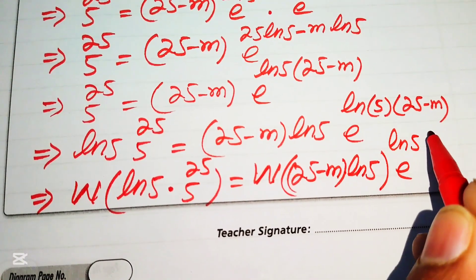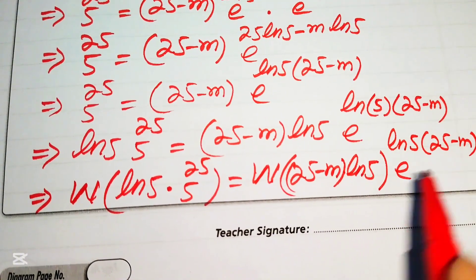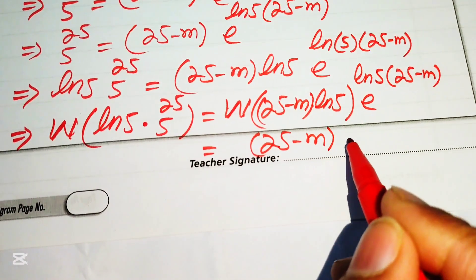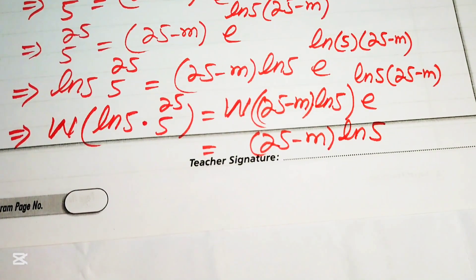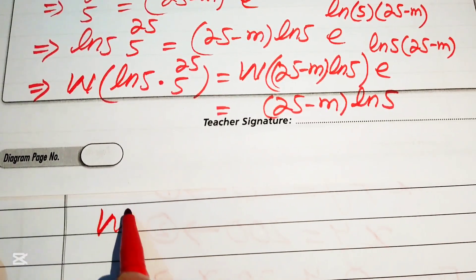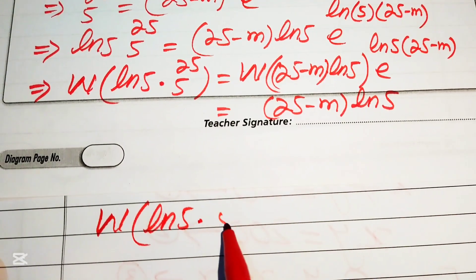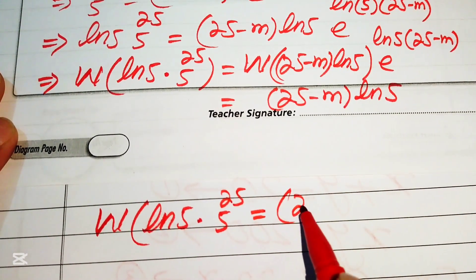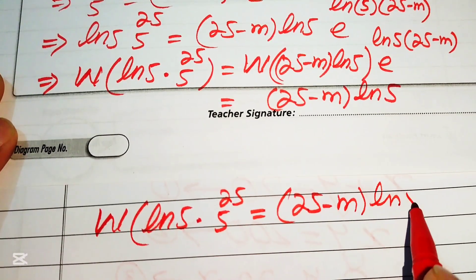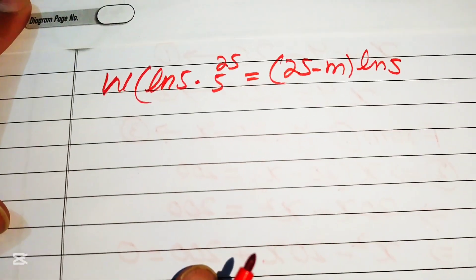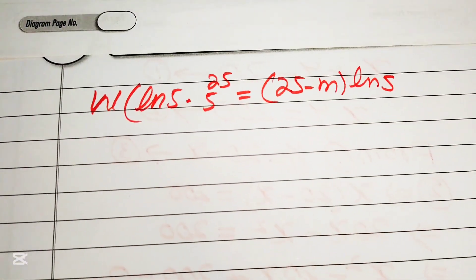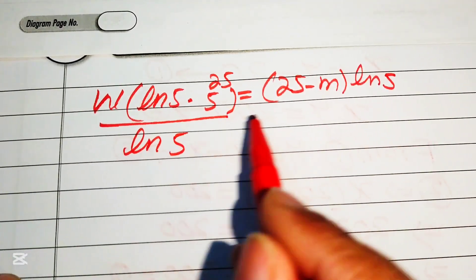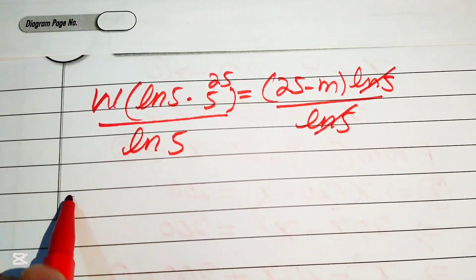Applying W to both sides: W(log5 · 5^25) equals W((25−m)·log5 · e^(log5·(25−m))). The output of the right-hand side is (25−m)·log5. So we have W(log5 · 5^25) equals (25−m)·log5. Dividing both sides by log5, the log5 terms cancel.